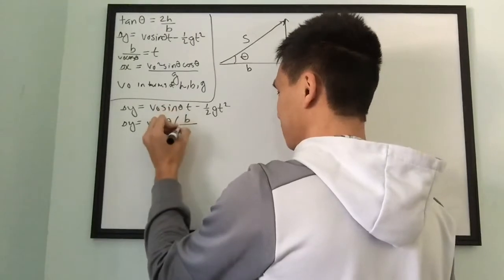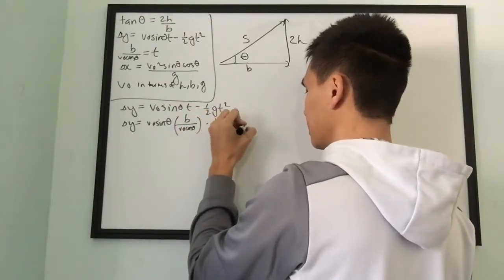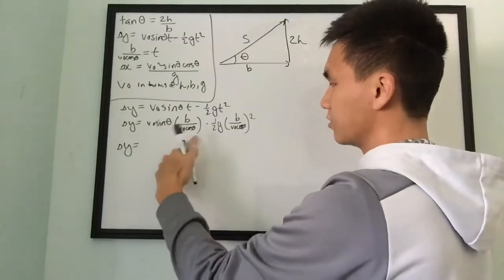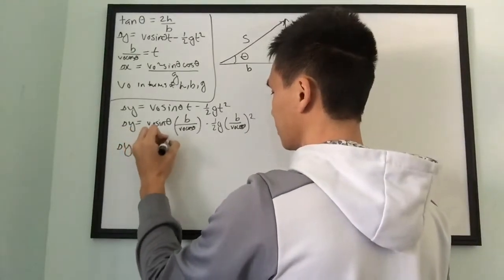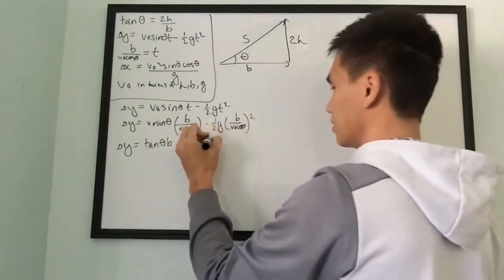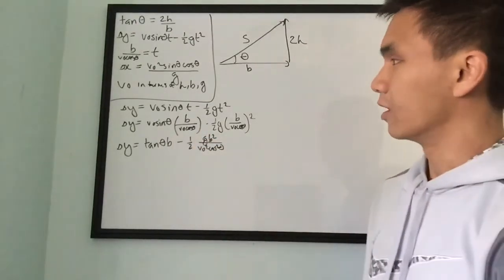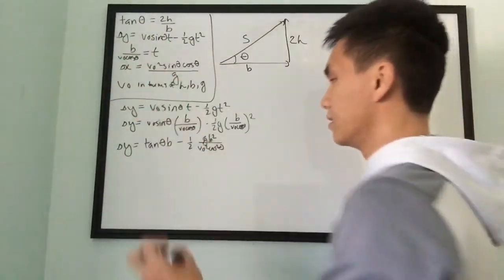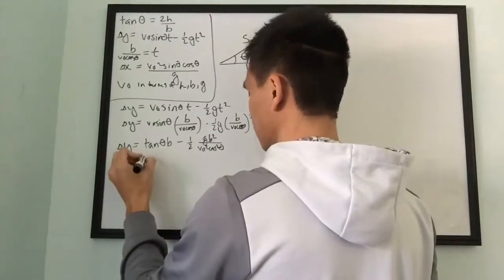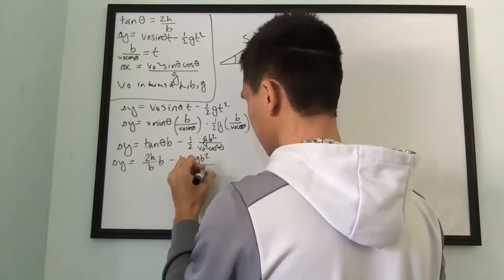b over v-naught cosine theta is substituted in for t: delta-y equals v-naught·sine(θ) times (b over v-naught cosine θ) minus one-half g times (b over v-naught cosine θ) squared. The v-naught terms cancel, sine over cosine is tangent, so: delta-y equals b·tan(θ) minus one-half g·b² over v-naught²·cosine²(θ). Then substituting tan(θ) equals 2h over b: delta-y equals b·(2h/b) minus one-half g·b² over v-naught²·cosine²(θ), giving 2h minus one-half g·b² over v-naught²·cosine²(θ).